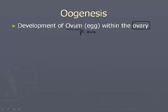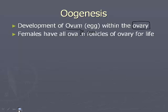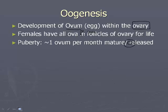Females have all their ova in follicles. So if we have our egg, there's a developing follicle and surrounding tissue around it. All of the female's ova are going to be in the ovaries at birth — they don't develop any more eggs as they go, unlike males who develop more sperm as they get older. Females release one ovum per month, taking about a month to mature before it's released. Even though there are two ovaries, only one is active per month. Sometimes multiple ones can come down, and that's how twins are formed.